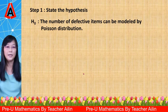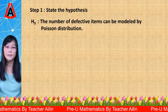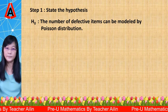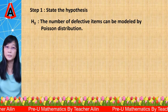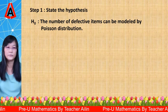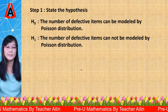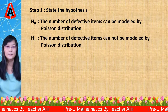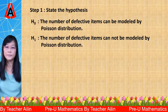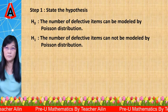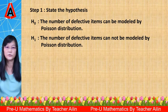The null hypothesis: the number of defective items can be modeled by Poisson distribution. The alternative hypothesis: the number of defective items cannot be modeled by Poisson distribution.